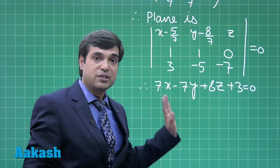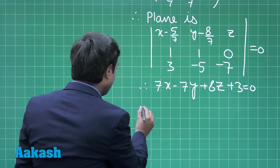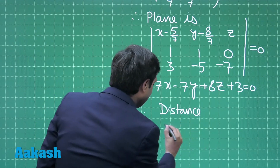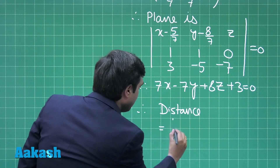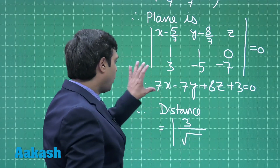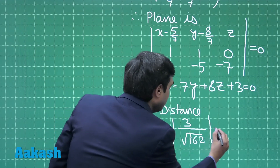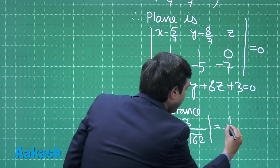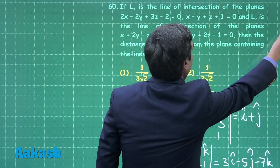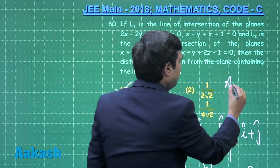The last step is finding the length of the perpendicular from the origin to this plane. The required distance equals |3| / √(49 + 49 + 64) = 3/√162 = 1/(3√2). From the given options, the correct answer is option number 1.